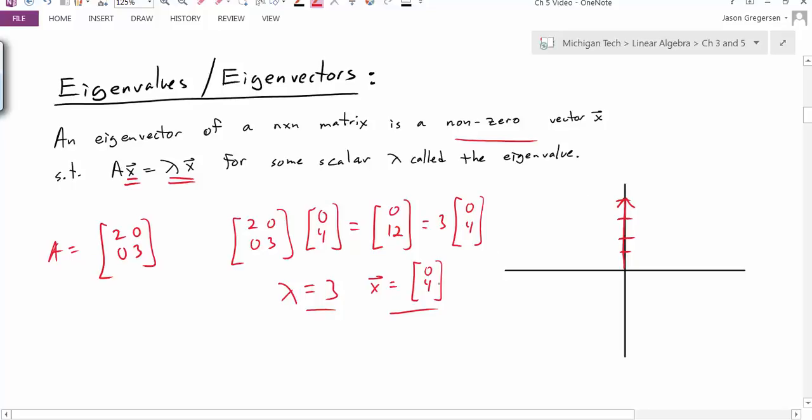So here if I multiply this vector, I get the vector [0, 12] as a result. So I'm really just stretching it by that factor of 3. This would be the new matrix A times x.